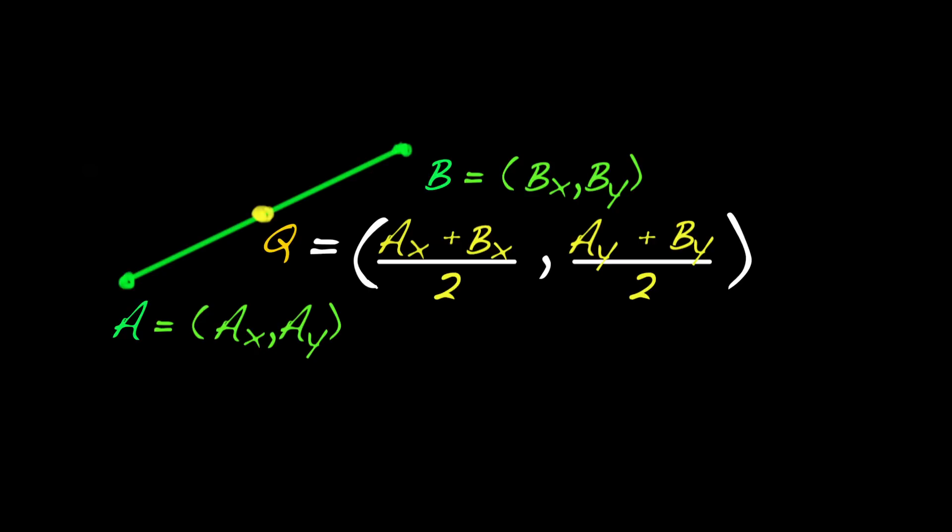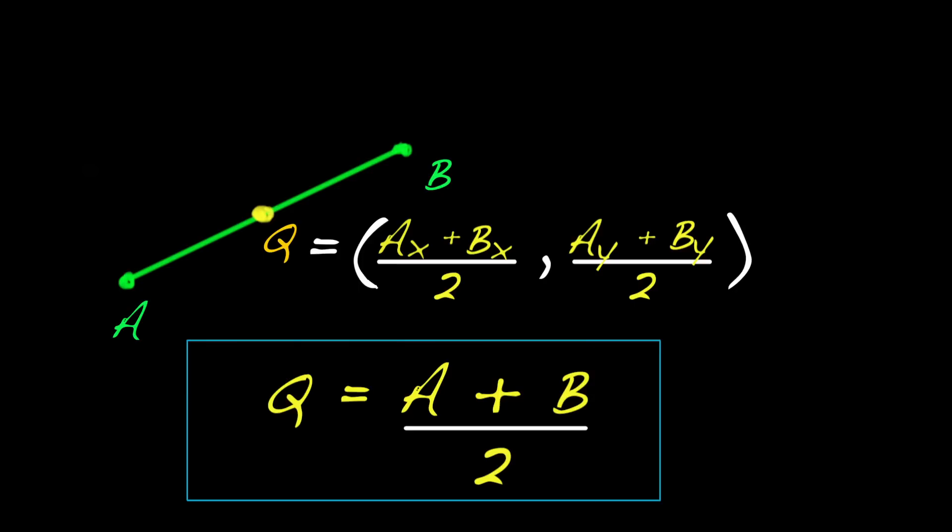I can abbreviate it and make it look a little bit simpler by writing Q as A plus B over 2. And what this means is, take the average of x and the average of y. So these two expressions just mean the same thing.